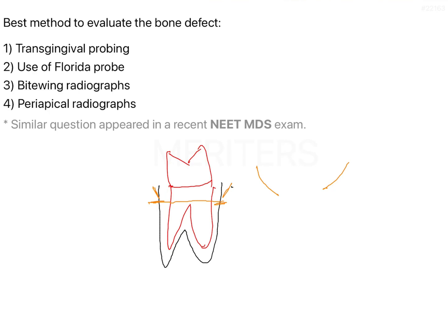Looking at the answer options given, you have transgingival probing, use of a Florida probe, bitewing radiographs, and periapical radiographs. Periapical radiographs, specifically for periodontology, are specific in nature — they help to increase the specificity.